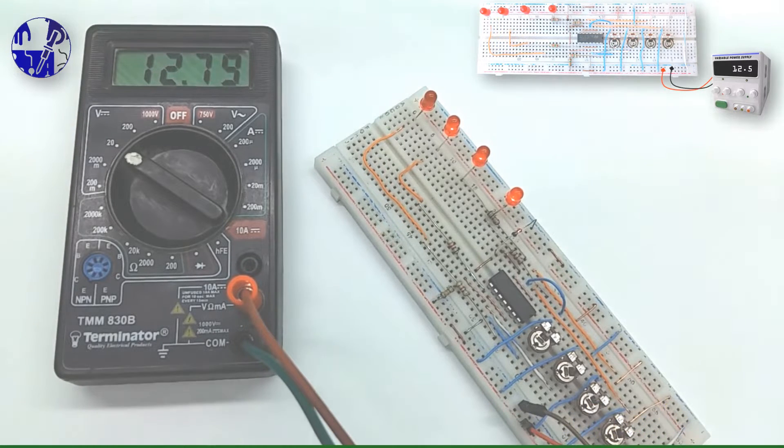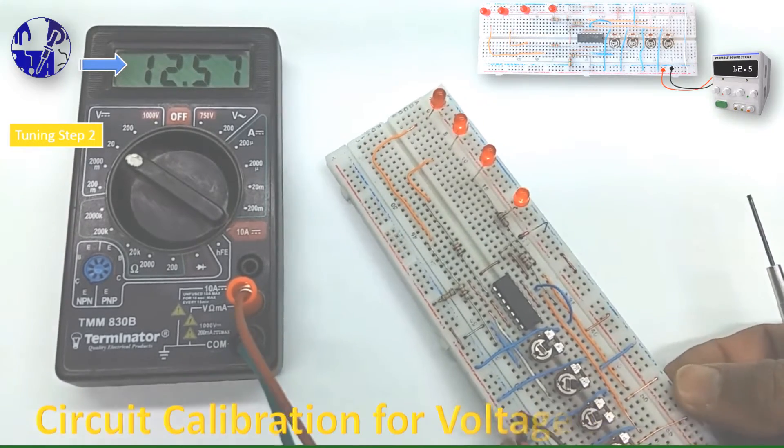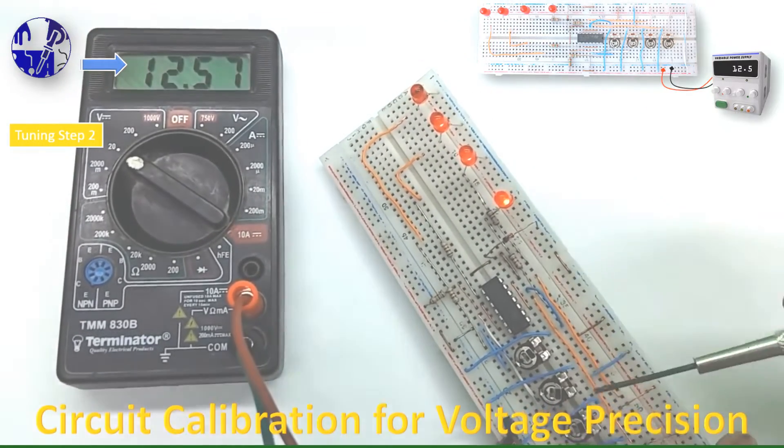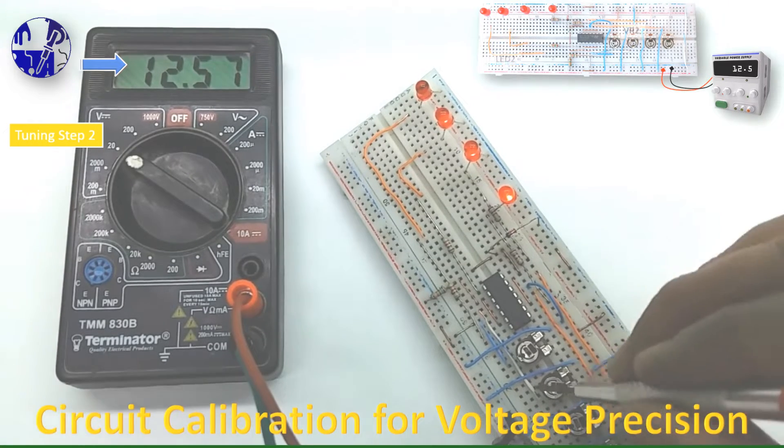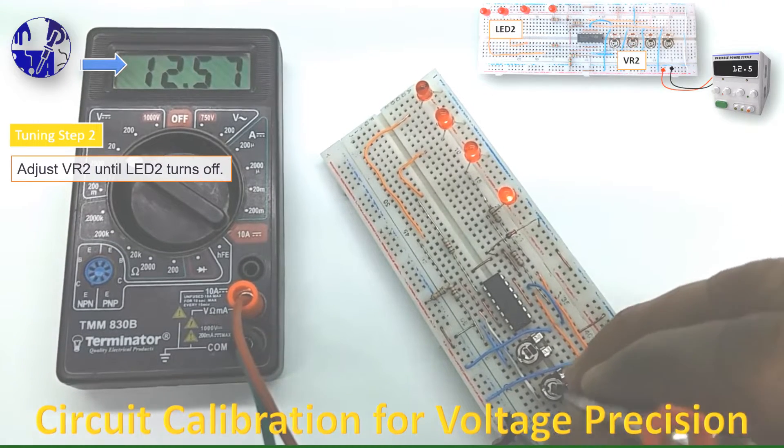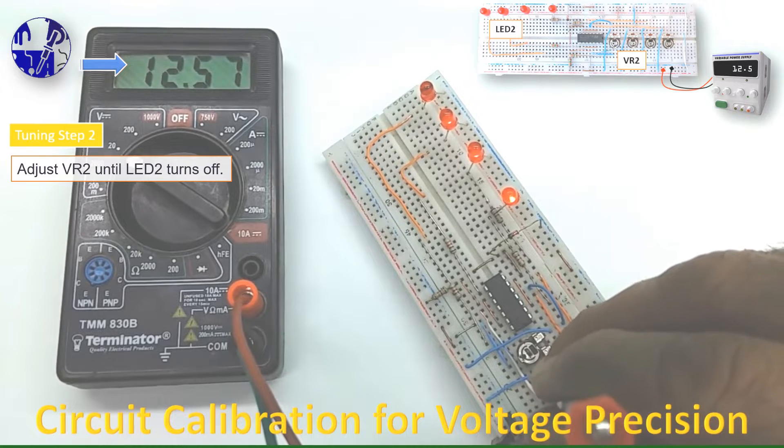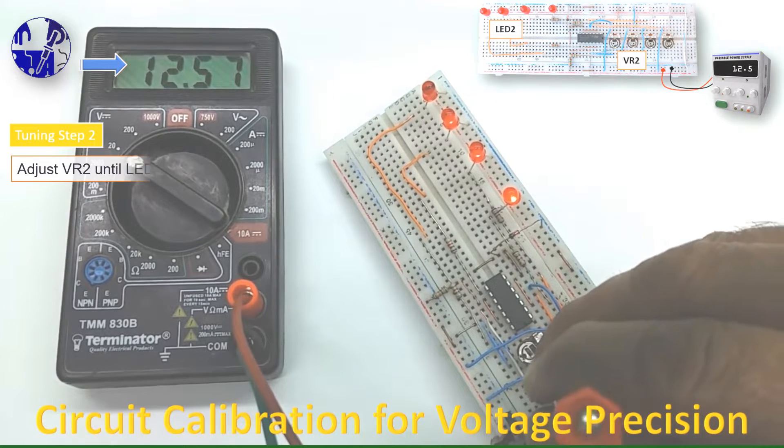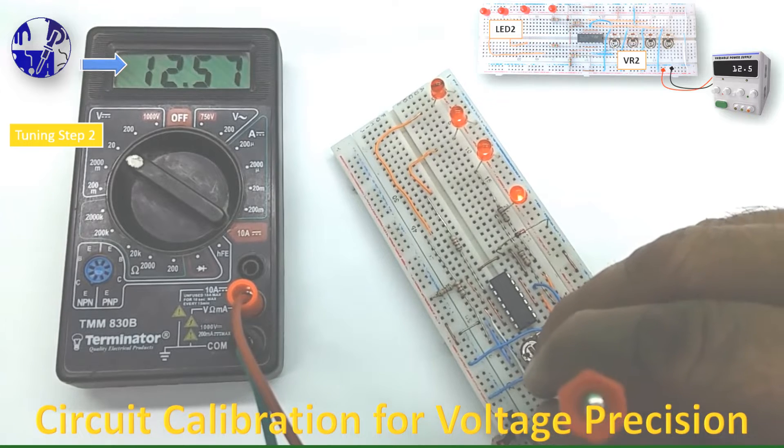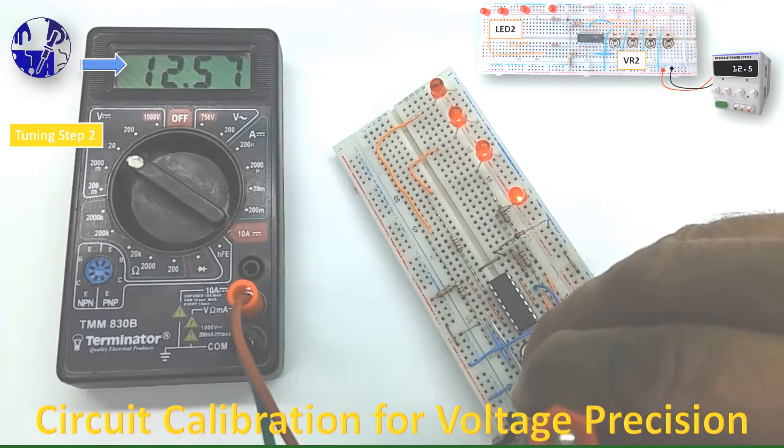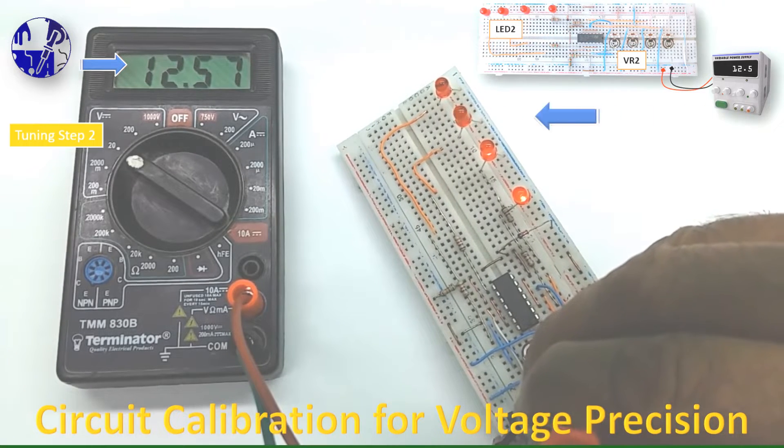Change the voltage of the power supply to 12.5 volt and adjust the VR2 until LED 2 turns off. When the battery voltage falls below 12.5 volts, LED 2 will turn off, signaling a voltage drop below 12.5 volts.